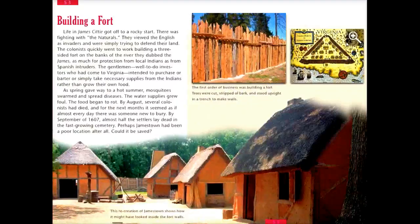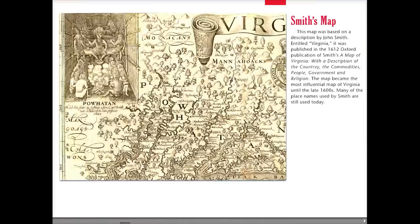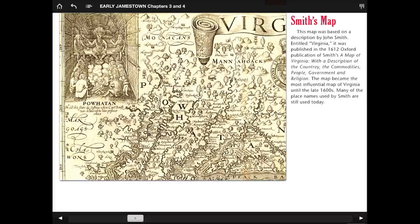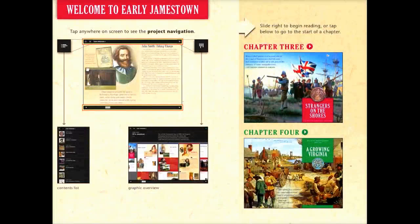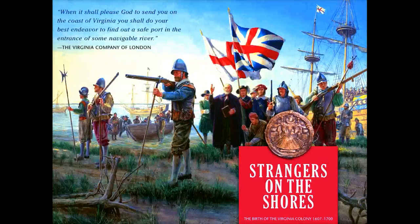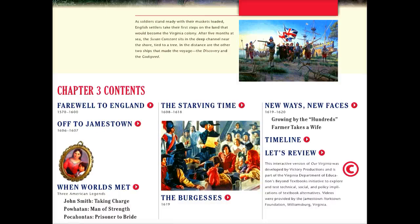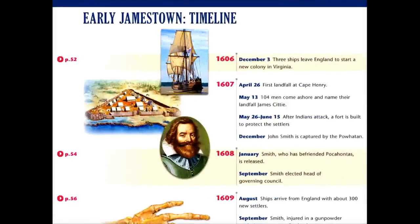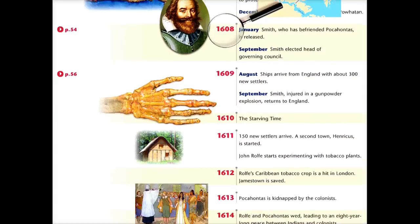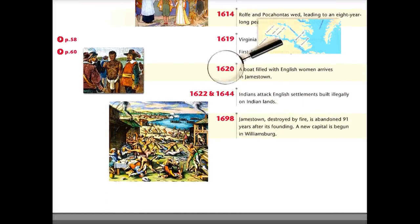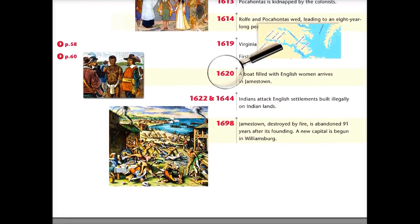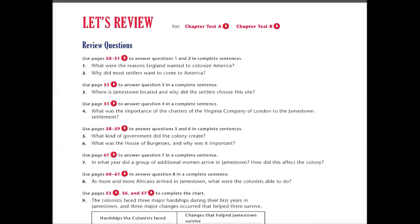Once you're done reading the chapter, if you go back to that main page — which you do by just tapping on the home button — and go back to chapter 3 in the table of contents, you can go to the timeline, which is great because you actually get a full timeline of everything you just read about.